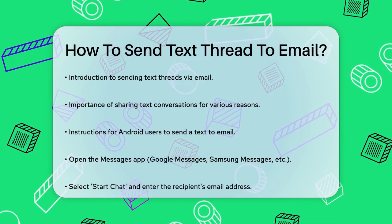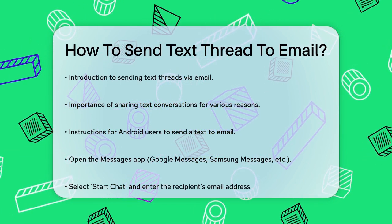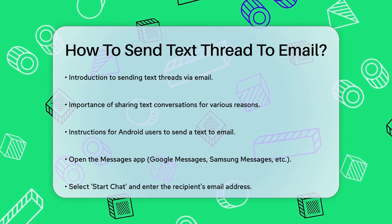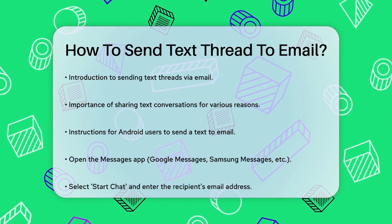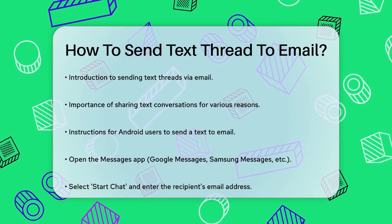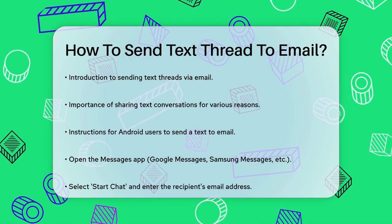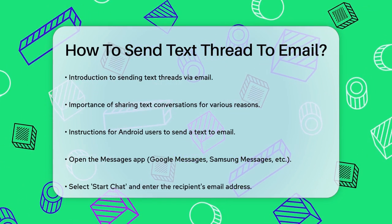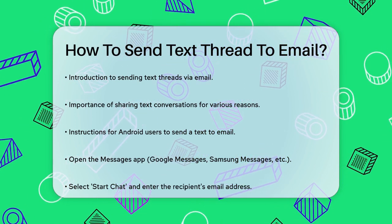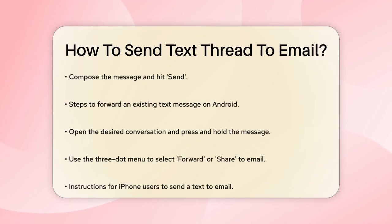Let's start with Android users. To send a text message to an email address on your Android phone, open your Messages app — this could be Google Messages, Samsung Messages, or any other SMS/MMS app you use. Select the Start Chat option to begin a new conversation. Instead of entering a phone number, type in the email address you want to send the message to. Once you've typed the full address, select the Send To prompt that appears below it.